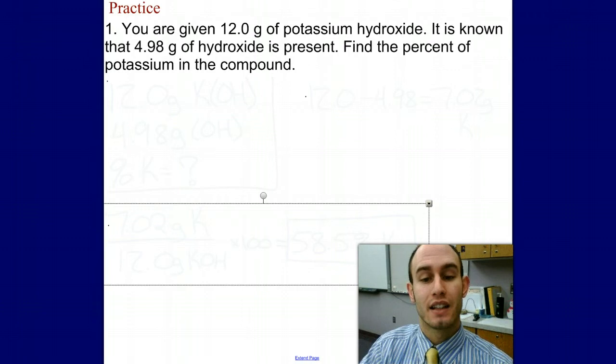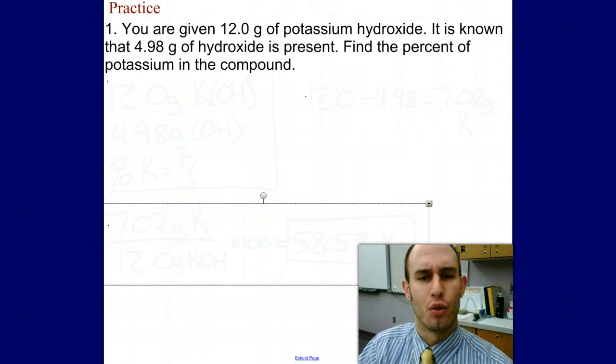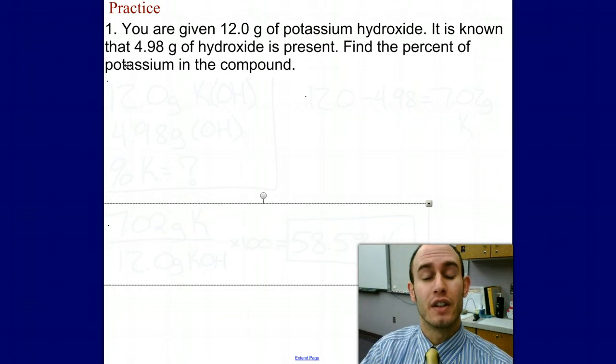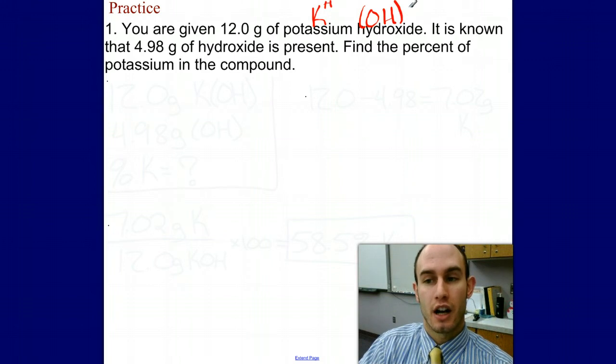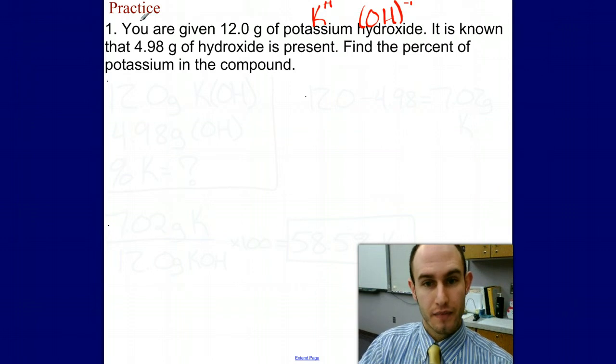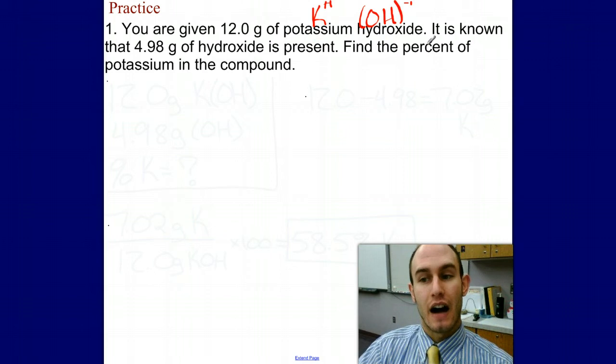One last example. Here we want to look at a word problem. We are given 12 grams of potassium hydroxide. We know the formula for potassium hydroxide, because we practiced our naming rules, is KOH. K has a plus one charge, hydroxide has a minus one charge, they're balanced, so KOH is a good formula. We are given that there are 4.9 grams of hydroxide present. Find the percent of potassium in the compound.